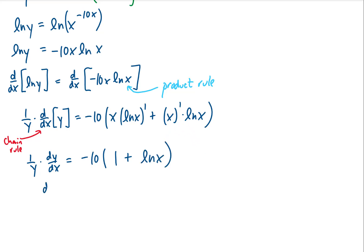Now dy/dx is the derivative of y with respect to x, which is exactly what we were trying to find in the first place. If we want to get that by itself, we can just take this y, which is in the denominator here, and multiply it on both sides of the equation. We get an answer of negative 10y times the quantity 1 plus the natural log of x.